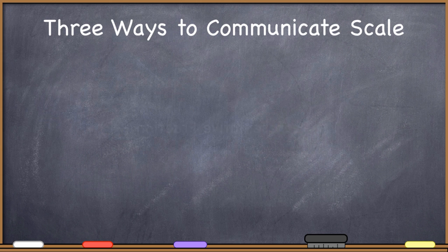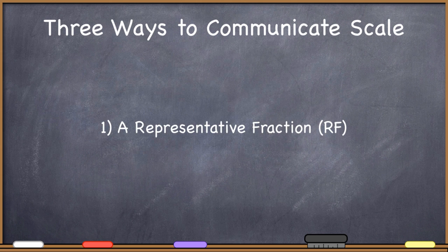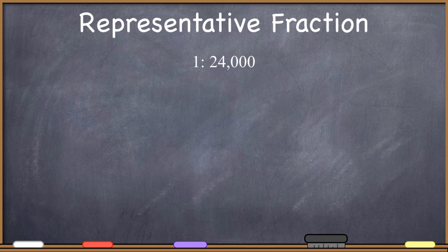In this video, we're going to focus on the first one, which is a representative fraction. One way to communicate scale is through the use of a representative fraction, and we already began looking at these when we calculated the scale of the globe. Here is an example of a representative fraction: 1 to 24,000.